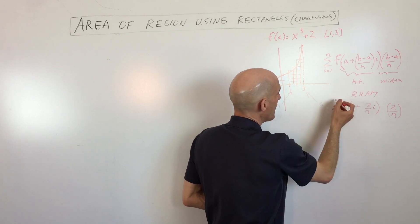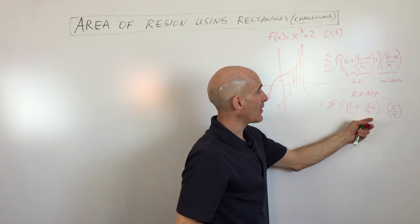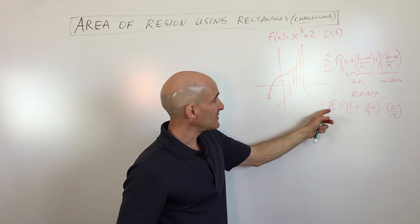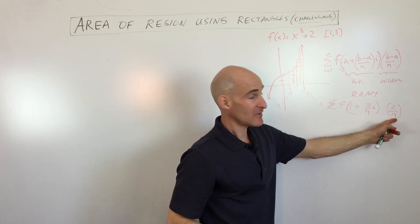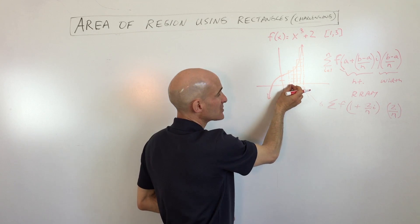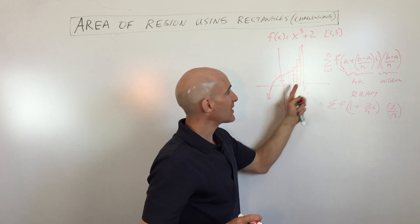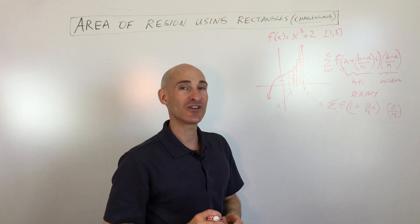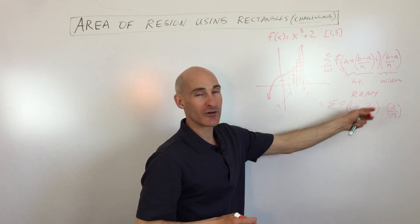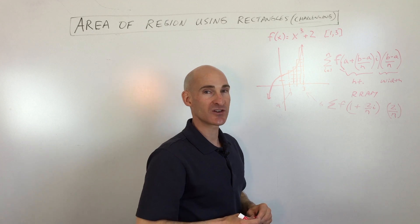By summing these up, we're going to be finding the sum of all the individual rectangles and approximating the area. If you take the limit as N goes to infinity, the rectangles get thinner and thinner, smaller and smaller, until they become paper thin. You're going to have an infinite number of rectangles and get the exact area underneath the curve. This is the power of limits, and this is getting us into what calculus starts to cover at the beginning.